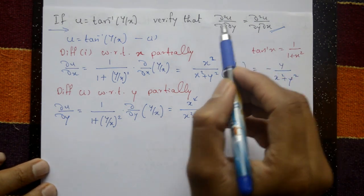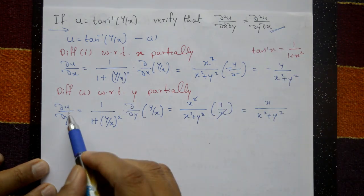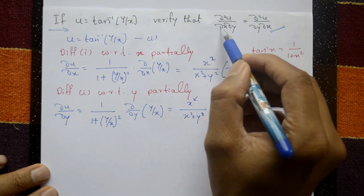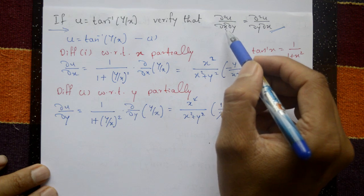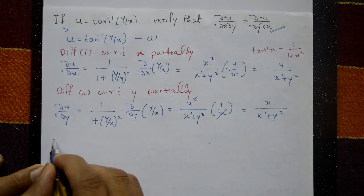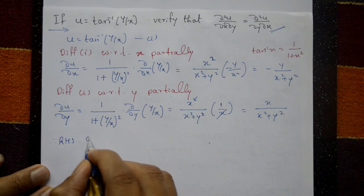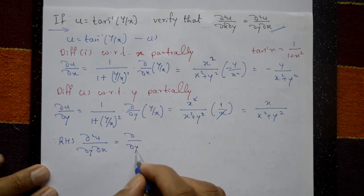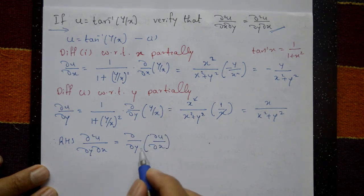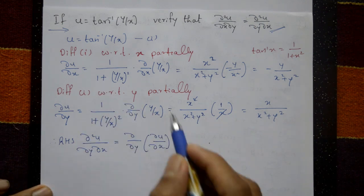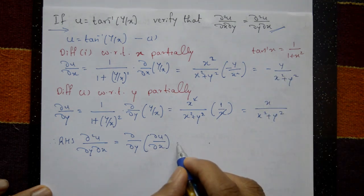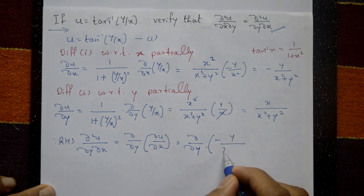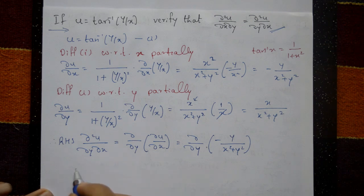Now compute ∂²u/∂y∂x (right hand side): this means ∂/∂y of (∂u/∂x). Differentiate ∂u/∂x, which is −y/(x² + y²), with respect to y using the quotient rule u/v form.